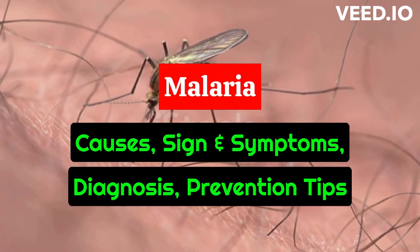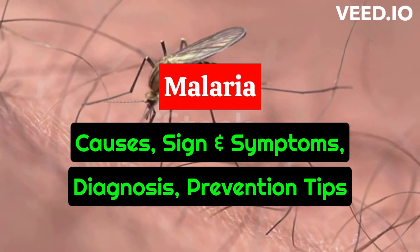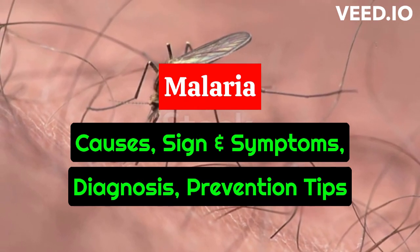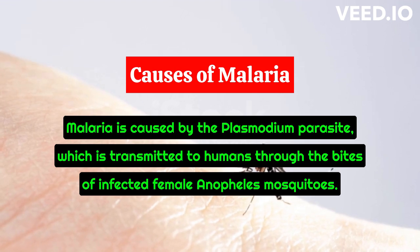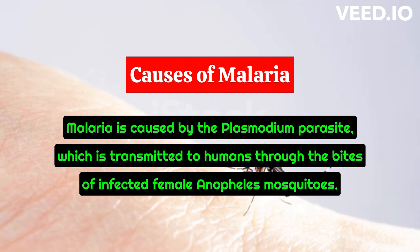Malaria is a potentially life-threatening disease caused by parasites that are transmitted to humans through the bites of infected mosquitoes. It is caused by the plasmodium parasite, which is transmitted through the bites of infected female Anopheles mosquitoes. There are four types of plasmodium parasites that can cause malaria, and they are prevalent in tropical and subtropical regions around the world.